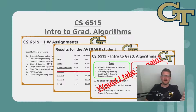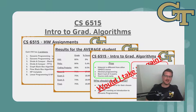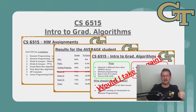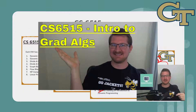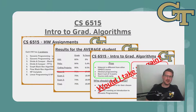Last semester, we did a final review on CS 6515, Intro to Graduate Algorithms. This course might be the most popular course in Georgia Tech's OMSCS program because it's required for almost every single specialization within the program. If you'd like to see the full review of this class, check out the link in the video description or find the video on my channel.